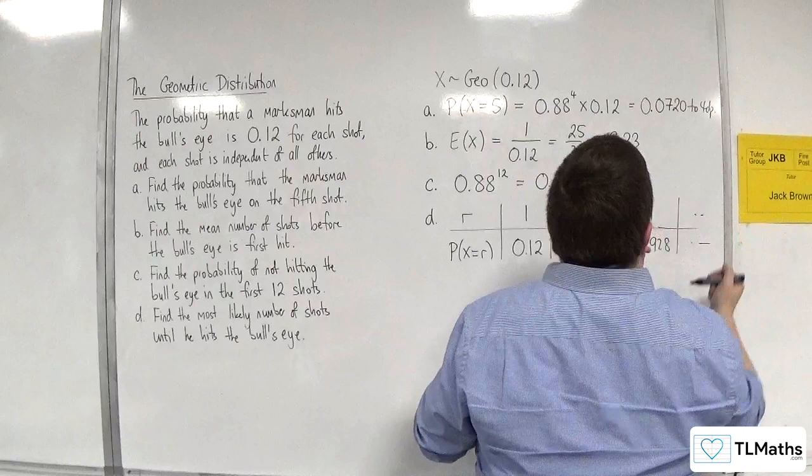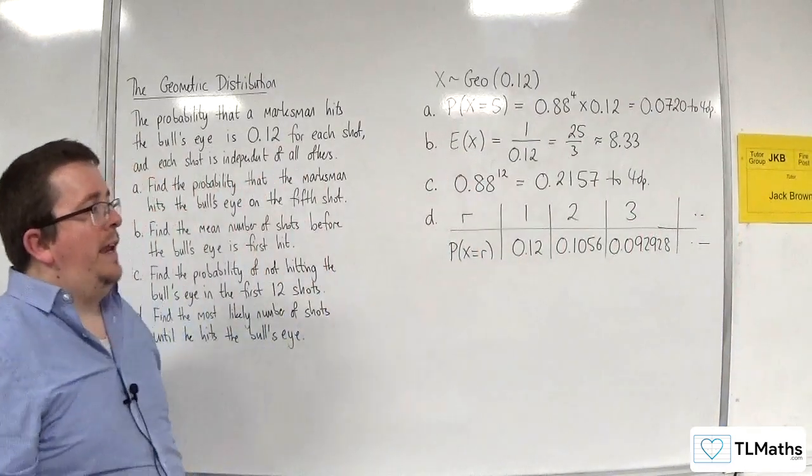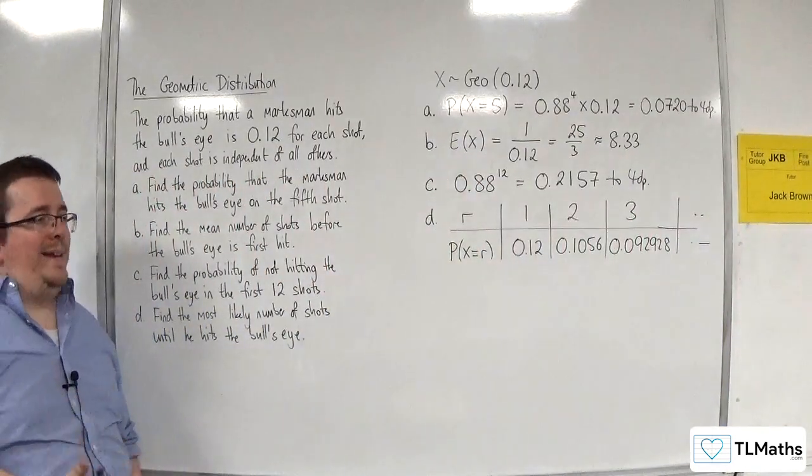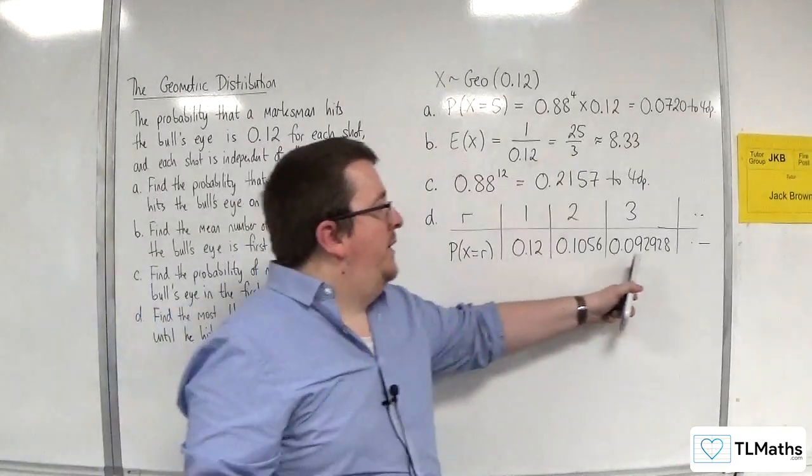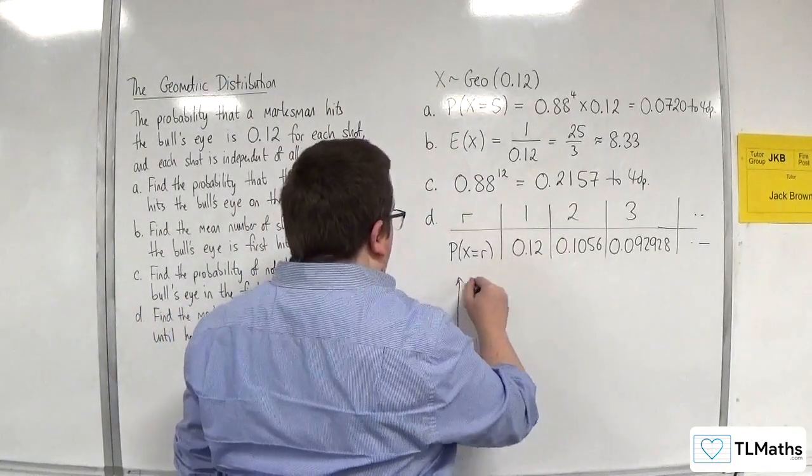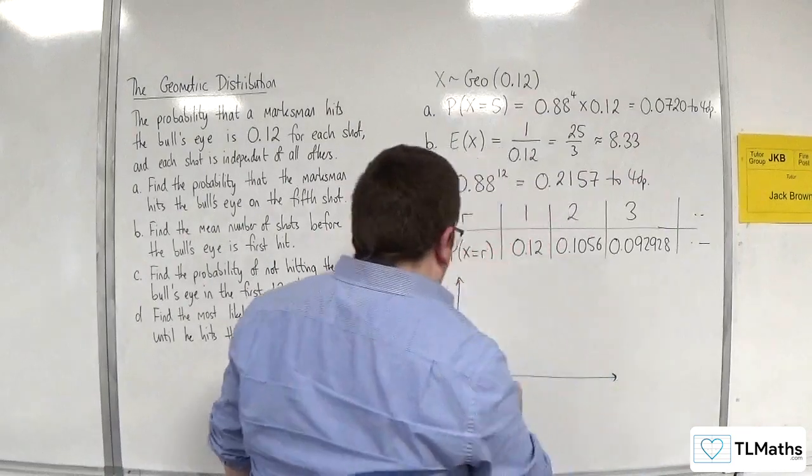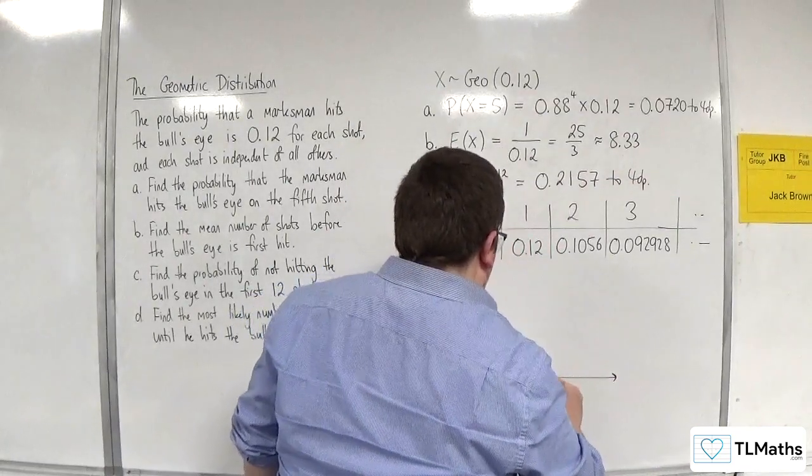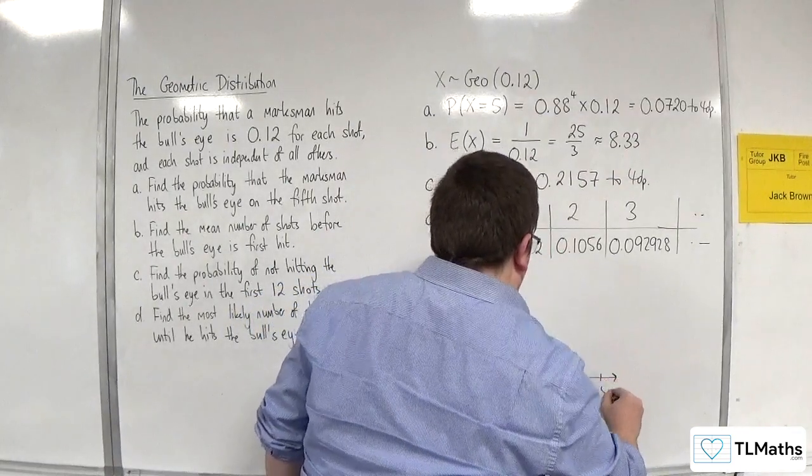So, as you continue, because each time you're multiplying by 0.88, these probabilities decrease. So, if you were to draw the distribution, what would it look like? Well, 1, 2, 3, 4, 5, etc. Here's the probability of X being equal to r.